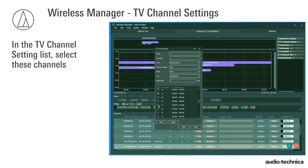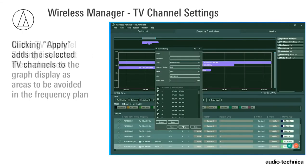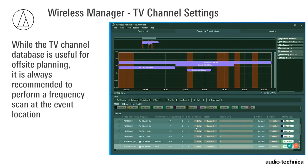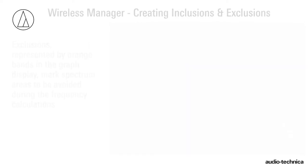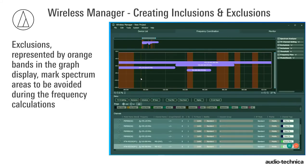In the TV Channel list, select these channels. Clicking Apply adds the selected TV channels to the graph display as areas to be avoided in the frequency plan. While the TV Channel database is useful for off-site planning, it is always recommended to perform a frequency scan at the event location. Exclusions, represented by orange bands in the graph display, mark areas of the spectrum to be avoided during the frequency calculations.